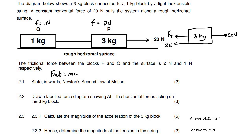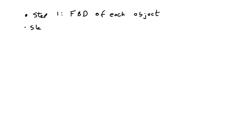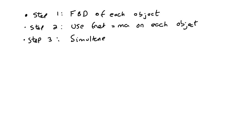Moving on to 2.3.1: calculate the magnitude of the acceleration of the three kilogram block. I'm going to show you a strategy for solving Newton's law questions when you have two objects connected. Step one: draw a free body diagram of each object. Step two: use F_net equals ma on each one. Step three: it will usually be a simultaneous equation to find acceleration and tension force.